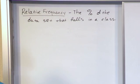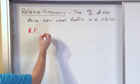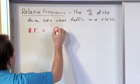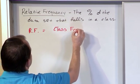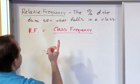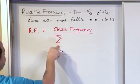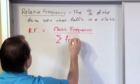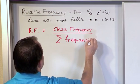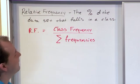If I write this down, the relative frequency, RF, equals the class frequency over the sum of the frequencies, all frequencies added together. This big symbol, sigma, means adding up all the frequencies in my table. You need to get used to seeing that symbol - it means you add lots of things together.